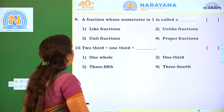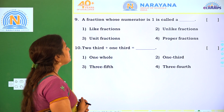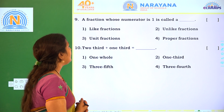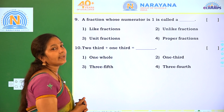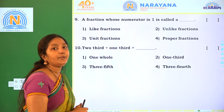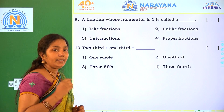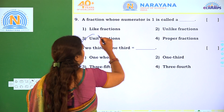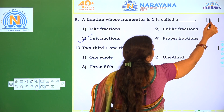Next one. A fraction whose numerator is 1 is called a unit fraction. 1 means unit — 1 unit — so it is called a unit fraction. The correct option is Option 3.